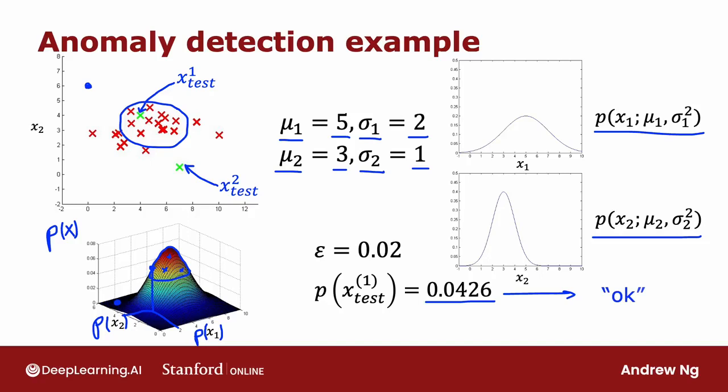Whereas in contrast, if you were to compute p(x) for this point down here, corresponding to x₁ equals about 8, and x₂ equals about 0.5, kind of down here, then p(x test2) is 0.0021. So this is much smaller than epsilon. And so the algorithm will flag this as a likely anomaly. So pretty much as you might hope, it decides that x test1 looks pretty normal, whereas x test2, which is much further away than anything you see in the training set, looks like it could be an anomaly.